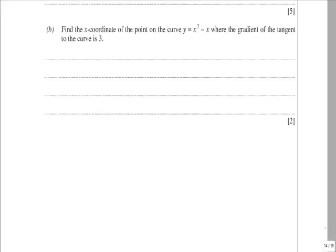In part B, we find the x-coordinate of the point on the curve y = x² - x where the gradient to the tangent to the curve is 3. As soon as we talk about gradients and tangents, we need to differentiate.